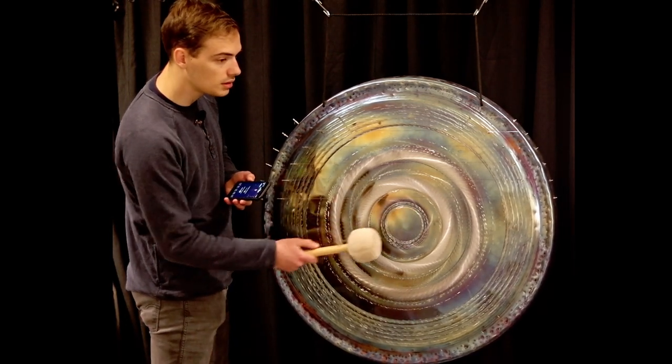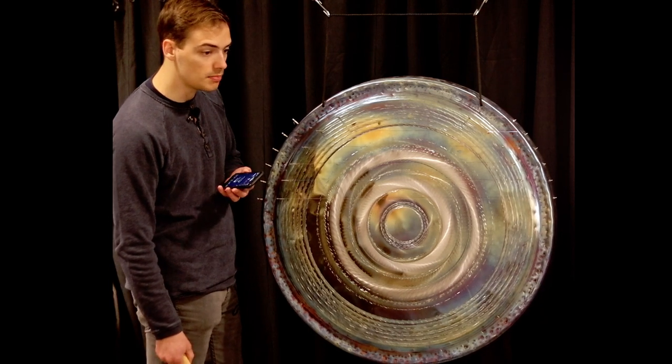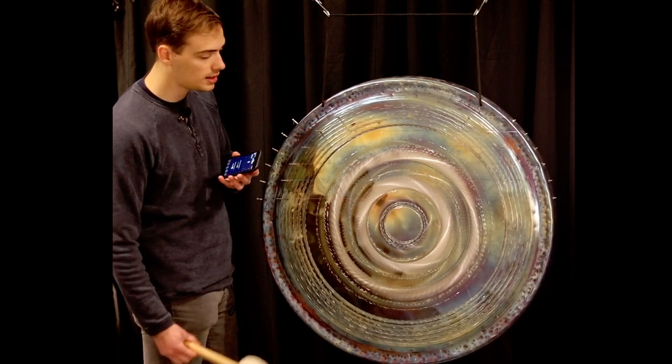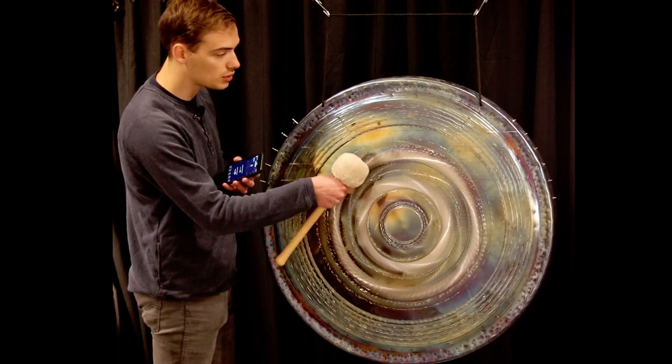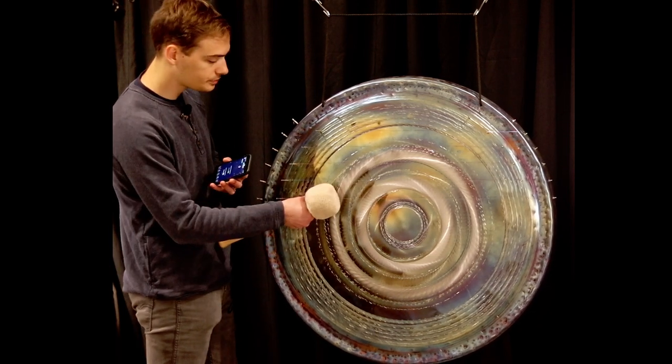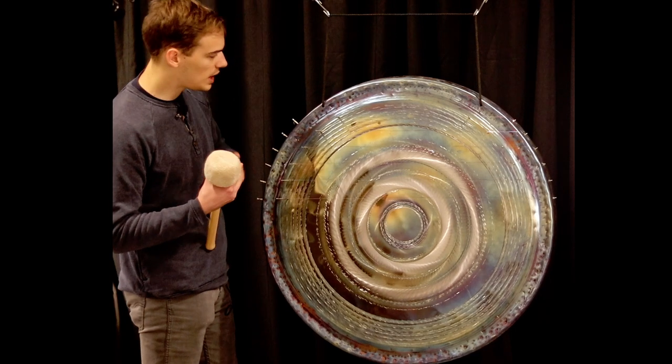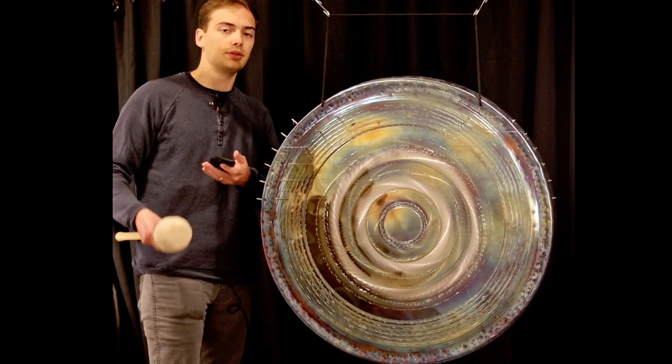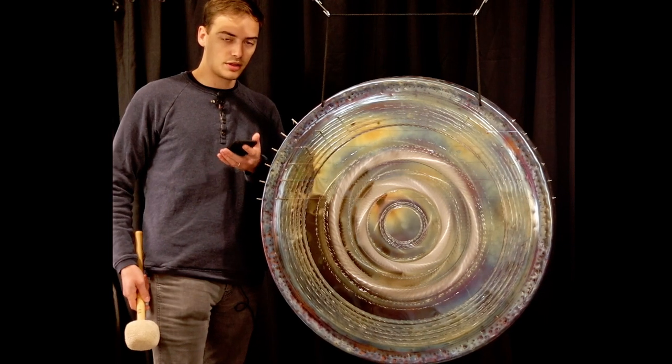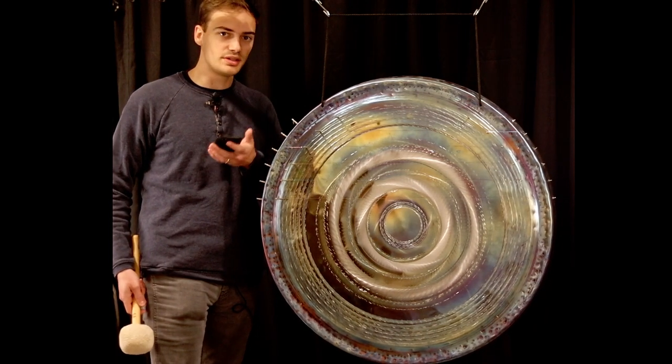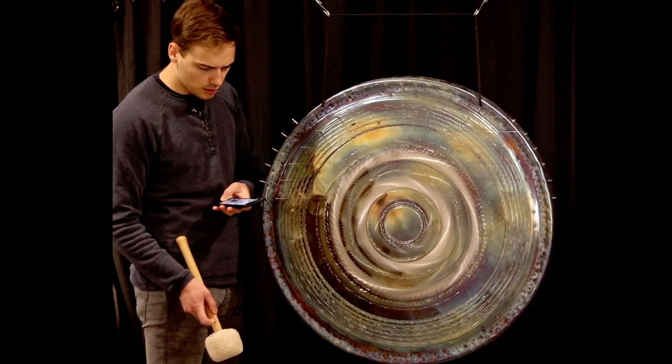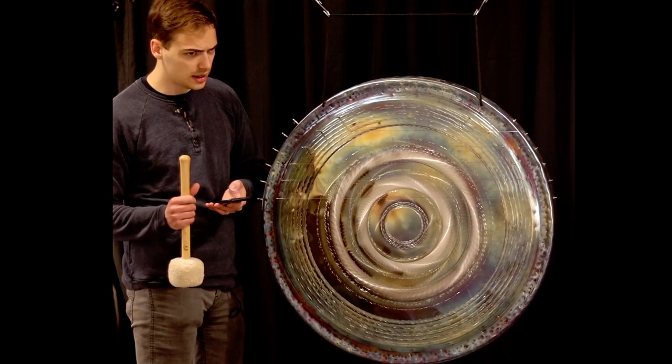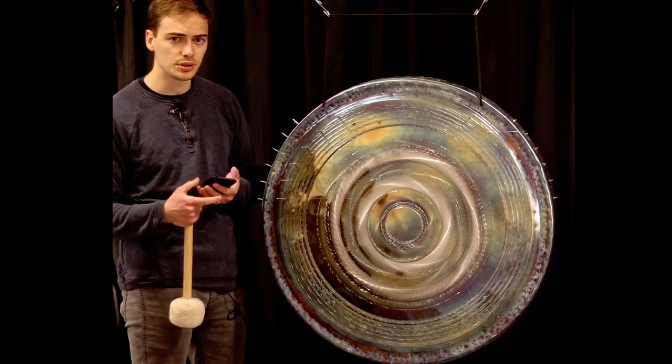So if this is registering as a B 30 cents above your quote-unquote standard B, then we're just going to tune the strings accordingly. And so now that we have our primary pitch, what we're going to want to do is pick the scale that we're going to tune these six strings to.